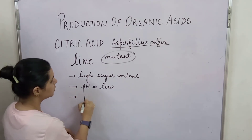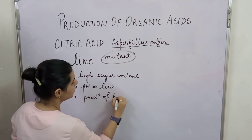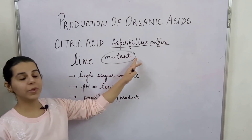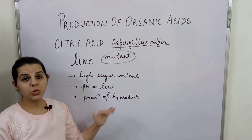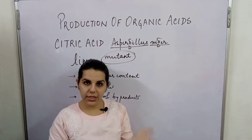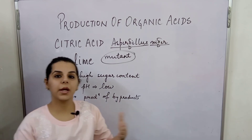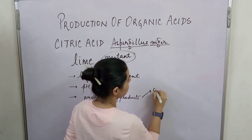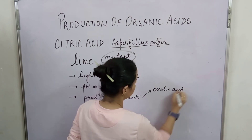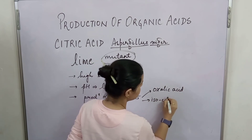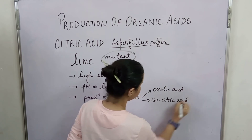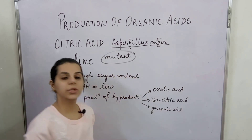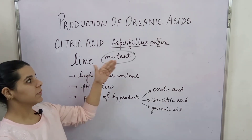Another very important factor is the production of byproducts. This mutant strain produces fewer byproducts. The original strain produces byproducts such as oxalic acid, isocitric acid, and gluconic acid — and that is why we prefer the mutant strain of Aspergillus niger.